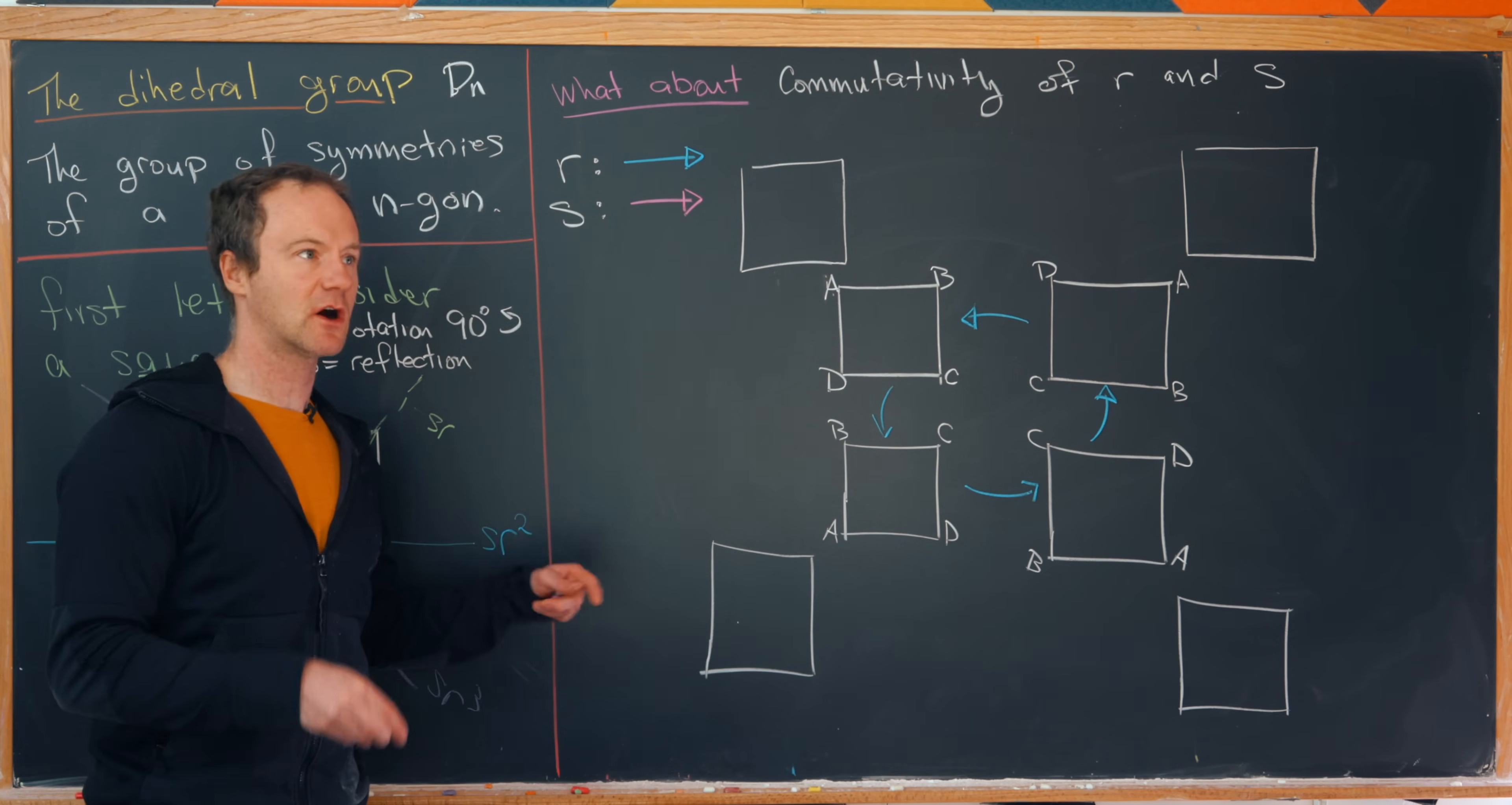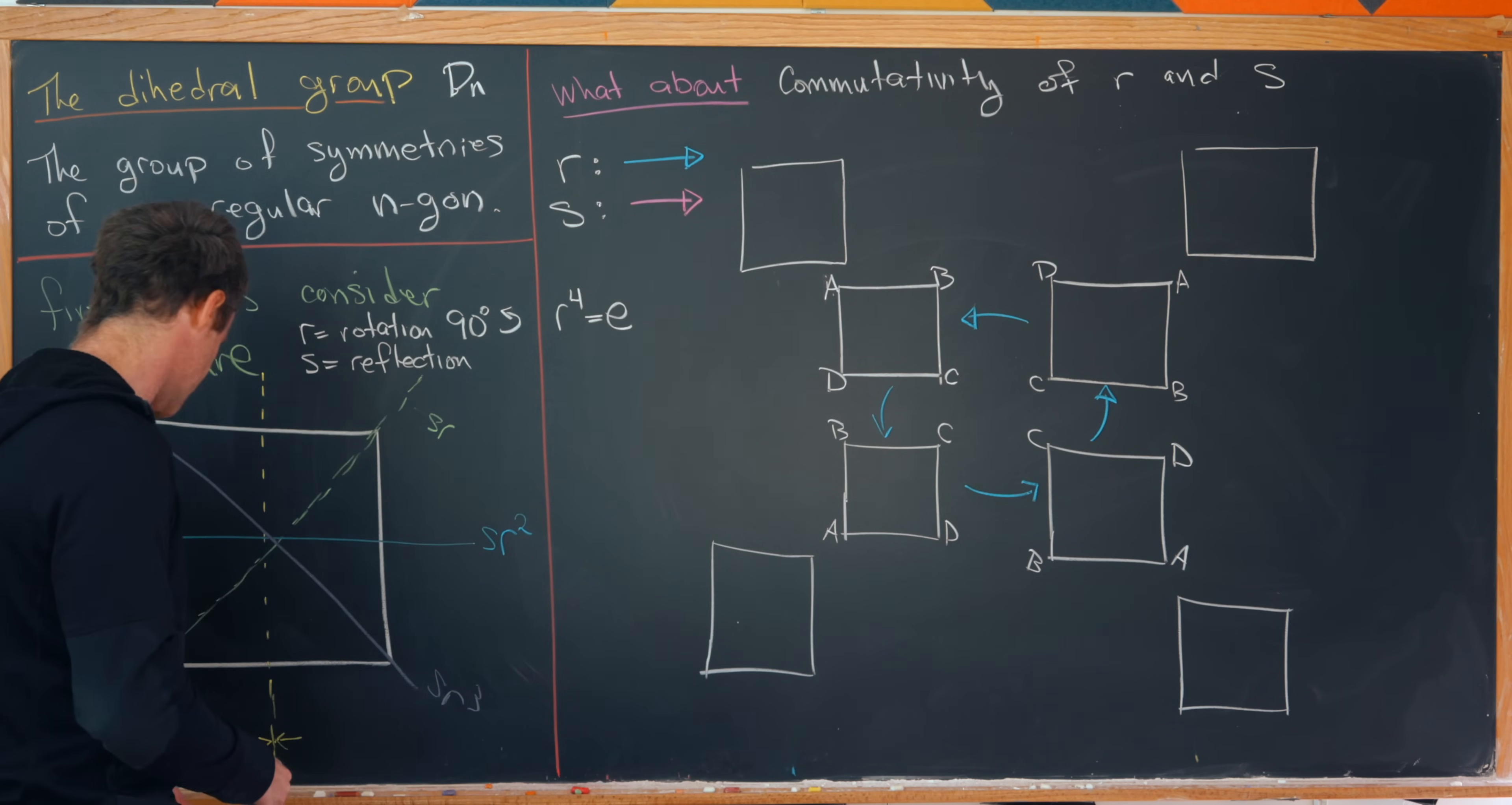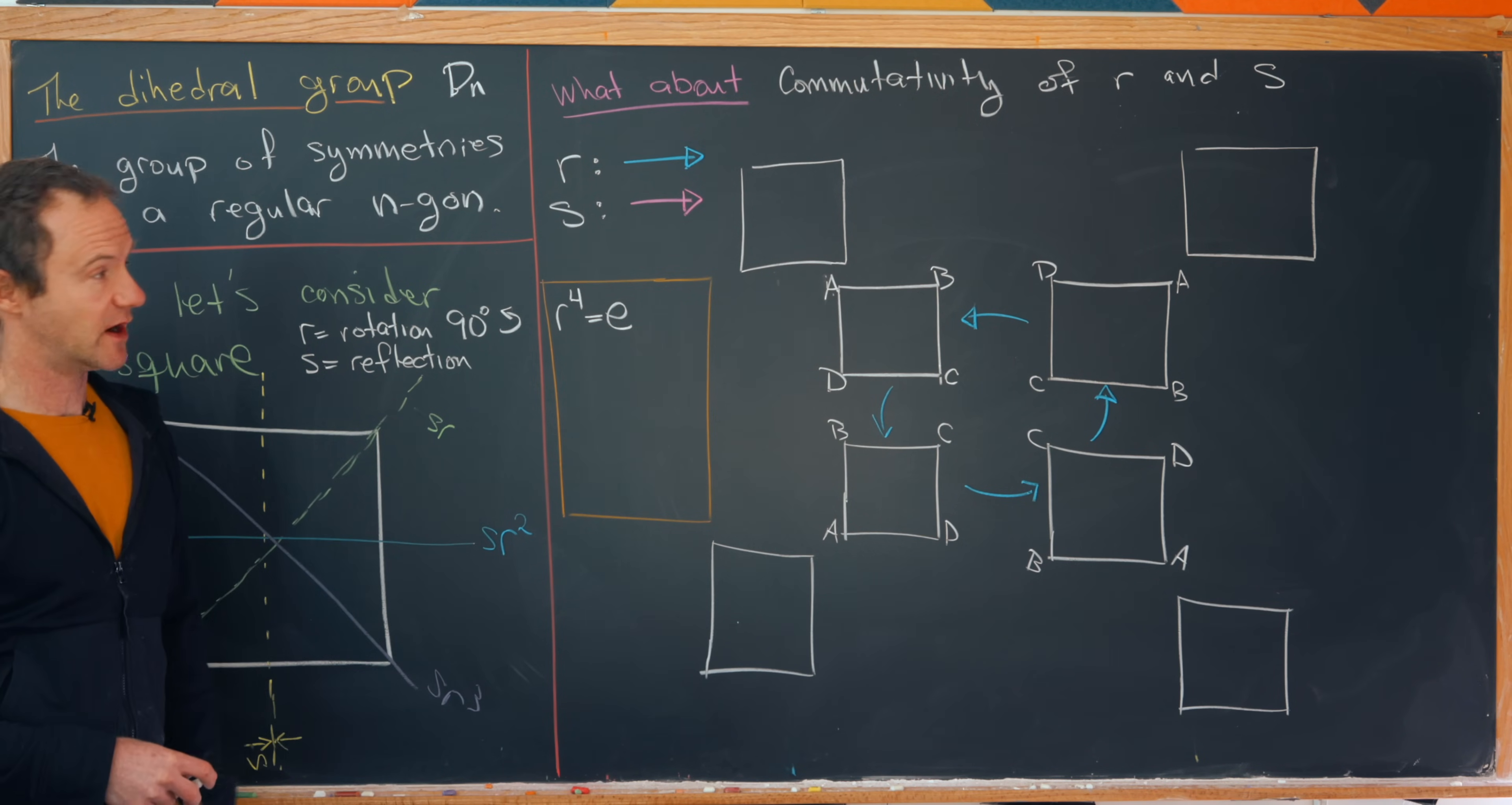And notice if we apply r one more time, we end up back where we started. So the fact that we end up back where we started after applying r four times really gives us motivation that r to the fourth power is equal to the identity. And let's recall that the identity inside of a group is generally denoted by e. So let's collect some of the rules for our group over here. So that shouldn't really be a surprise though.